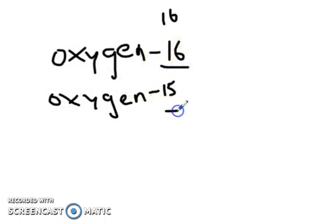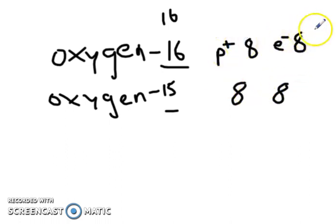The only thing that causes a difference in the mass is the number of neutrons. So the proton number here would be the atomic number, which is 8. So would this one for oxygen 15. The number of electrons would also be 8. Remember that they are the same number. But the number of neutrons would be different.